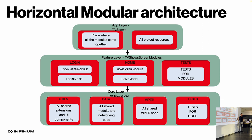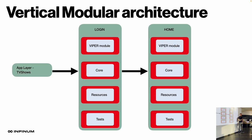This is called a horizontal architecture because every single layer is at its own level of abstraction — screens only have screens, and the core layer only has shared code. Another approach would be to implement a vertical modular architecture. Here you would have vertical layers, and each of the layers would be a specific feature of the application. So in the TV Shows application, we would have a login layer and a home layer.